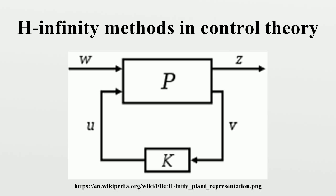Commercial software is available to support H-infinity controller synthesis. For problem formulation, the process has to be represented according to the following standard configuration. The plant P has two inputs: the exogenous input W, that includes reference signal and disturbances, and the manipulated variables U. There are two outputs: the error signals Z that we want to minimize, and the measured variables V that we use to control the system. V is used in K to calculate the manipulated variable U. Note that all these are generally vectors, whereas P and K are matrices.